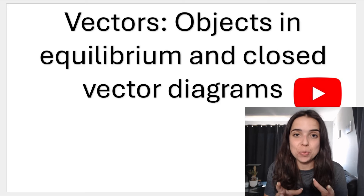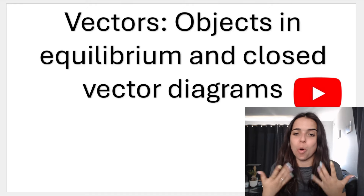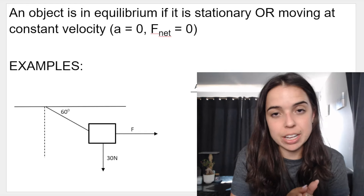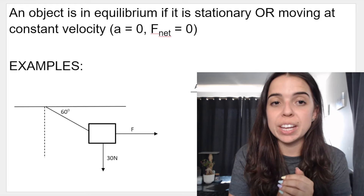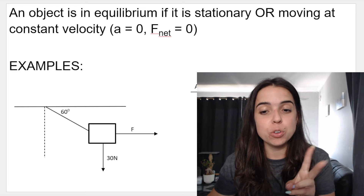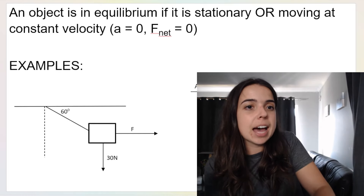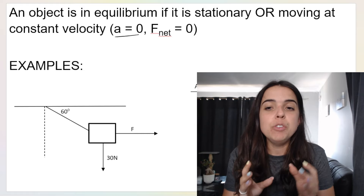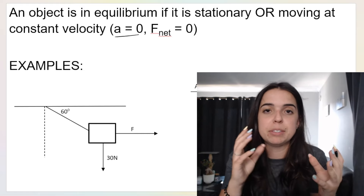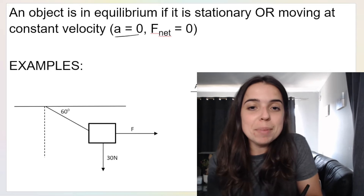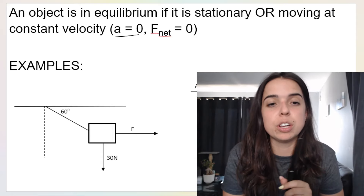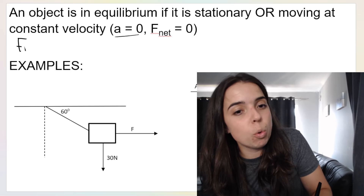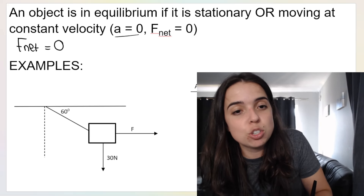What is a closed vector diagram? When do we use it? And what do you mean by forces or objects in equilibrium? The first thing you need to know is an object is in equilibrium if it is stationary — in other words, standing still — or moving at a constant velocity. What's important between those two scenarios is that acceleration is zero. If you're not moving, your velocity is zero. If you're moving at a constant velocity, if VF is the same as VI, your acceleration is zero. And that means F net is zero.